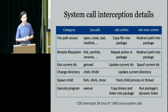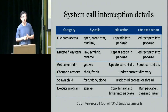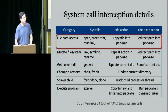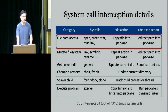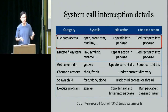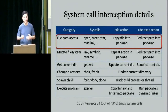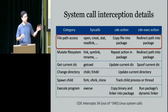CDE only has to intercept 34 out of the approximately 340 system calls on Linux — about 10 percent — mostly ones dealing with the file system. The most common category is system calls that access file paths: open is the canonical example, taking a path specifying a file name and opening it. CDE copies that file into the package, and CDE-exec reroutes the system call to open the version inside the package.